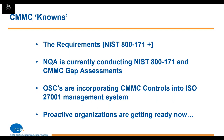A couple other knowns: we know what the requirements are. We've got the model, and more so than that, we know what it's based on — NIST 800-171, which has been around for several years, and NQA has been conducting assessments to it for several years. So the requirements aren't terribly new or different. They come from all pre-existing standards, so there's a lot of work we can do to understand the requirements and get organizations ready. Many OSCs are incorporating those additional CMMC controls into their ISO 27001 management system — you can add additional controls to be audited under ISO 27001 on top of Annex A, and that's what you do here.